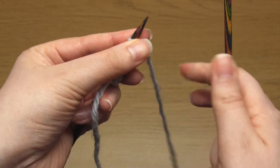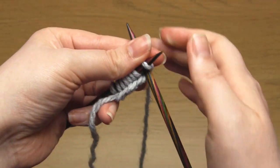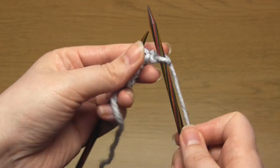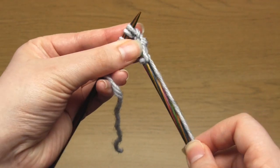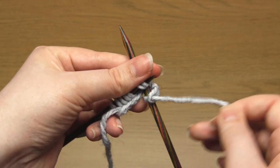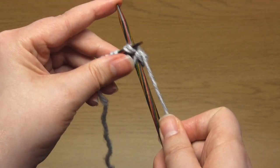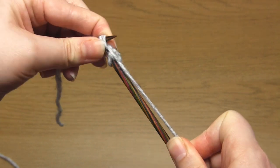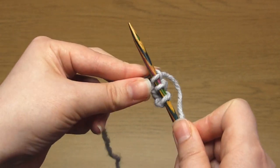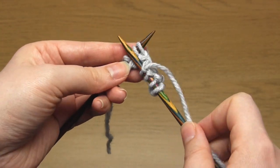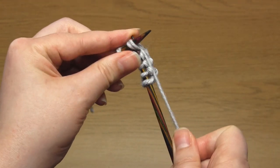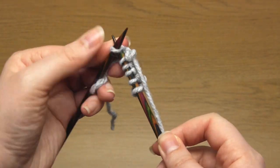For row 2 you begin by knitting 1 stitch. Then you need to do a k2tog decrease which is where you just knit 2 stitches together. So take your right hand needle up through 2 stitches instead of the usual one and then do all the normal steps of a knit stitch. This reduces 2 stitches down to 1. Then knit 2 stitches and do another k2tog. So just knit 2 stitches together and then knit the last stitch.